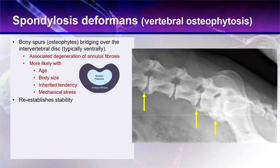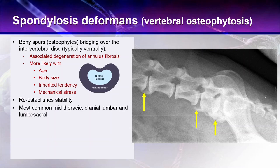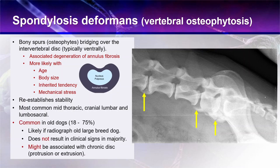What is the purpose of it? It is simply a means of re-establishing stability. The disc and the end plate are important for stabilizing the spine. If there is increased mobility or degeneration, the body's response is to put this protective bony spur between the vertebrae to re-establish stability. So it's most common in areas with increased movement — the mid-thoracic, the cranial lumbar, and the lumbosacral region — and it's really common in all dogs.